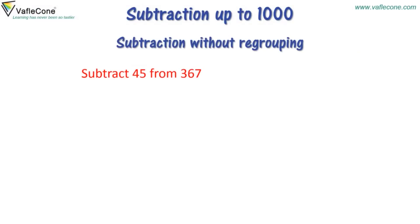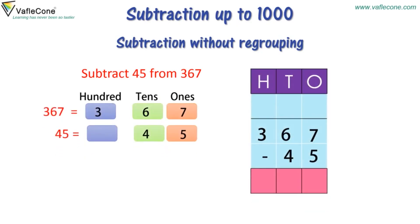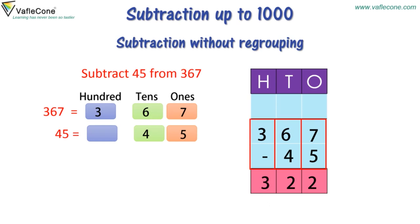Subtraction without regrouping. To subtract, we need to arrange the minuend and subtrahend as per their place values. Start subtracting from the 1's place: 7-5 is equal to 2. Then at the 10's place: 6-4 is equal to 2. And now at the 100's place: 3-0 is equal to 3. So the answer is 322.